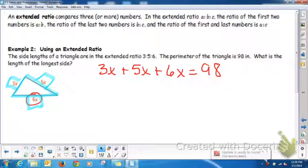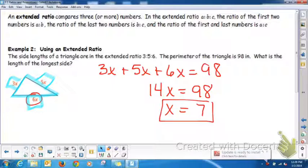So by combining our like terms, we're going to get that 14x is equal to 98, and therefore, x is equal to 7. Well, now we want to know what's the length of the longest side. So the length of this side, it's 6x's, and if x is 7, then this side here is 42 inches.